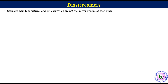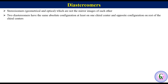In optical isomerism, the two diastereomers have the same absolute configuration at least at one chiral center and opposite configuration at the rest of the chiral centers. For example, cis and trans isomers are also referred to as E and Z isomers.